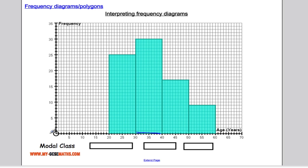So we were talking about age here. The modal class will be 30 less than or equal to a less than 40.